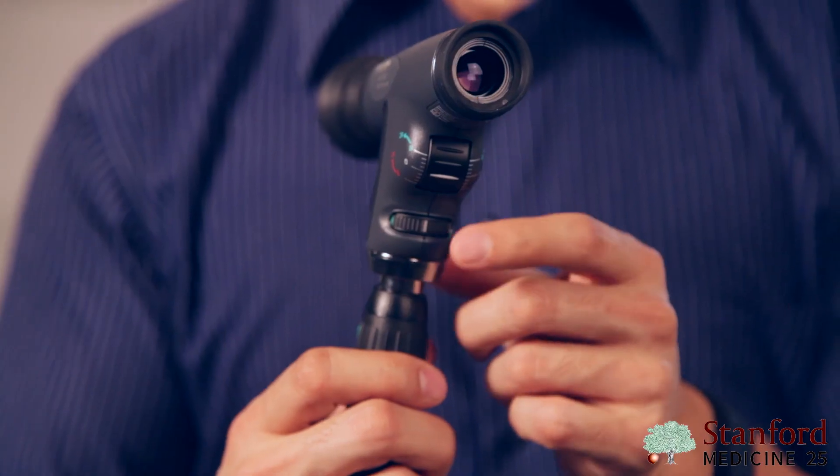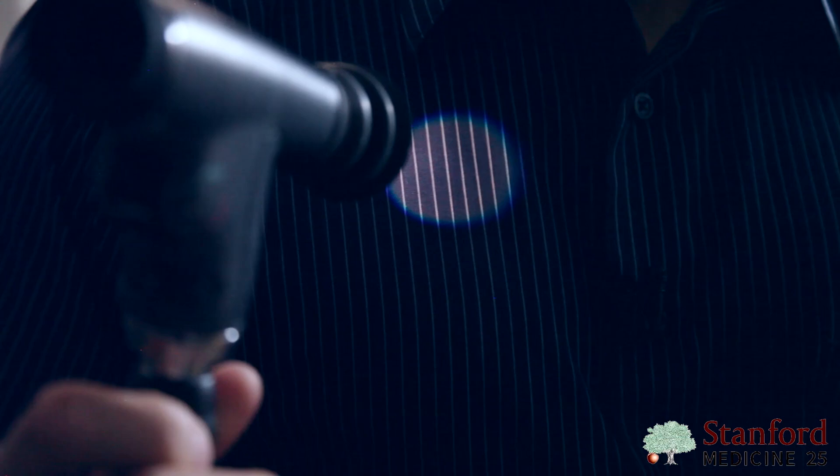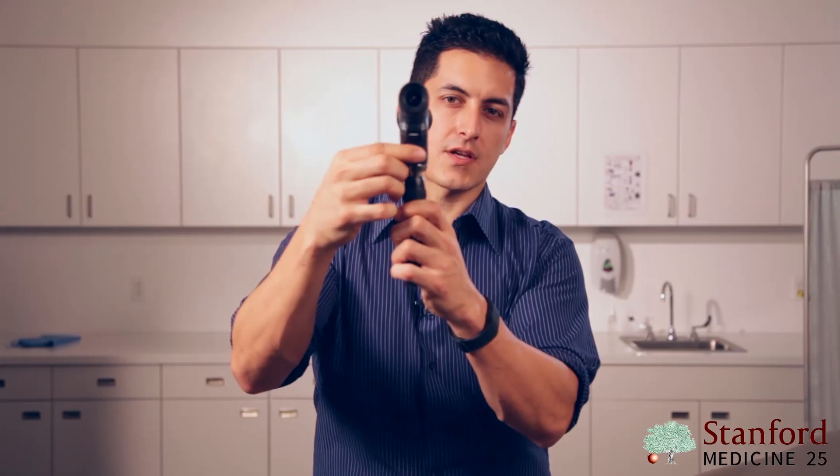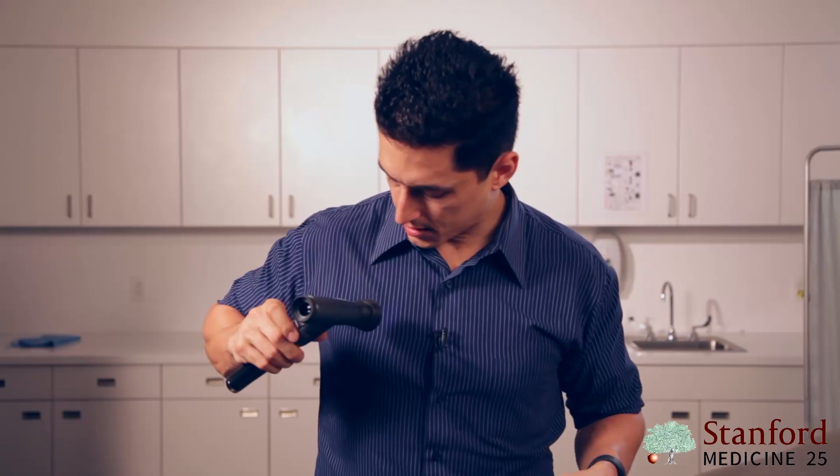The second thing to know about the ophthalmoscope is this carousel setting, which allows you to change the different types of light coming out of the scope. The green line provides a medium-sized circle, which is what I recommend most people use. Sliding the green line left or right gives you varying sizes. You'll also see a tiny slit lamp to look for variations in contour, a blue cobalt filter to look at corneal abrasions with fluorescein dye, and a green red-free filter to see better contrast on the red blood vessels in the back of the retina.